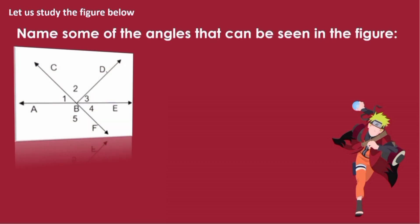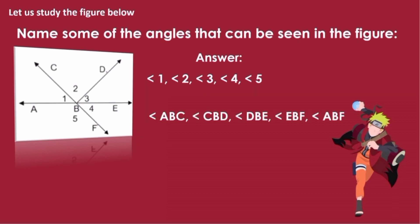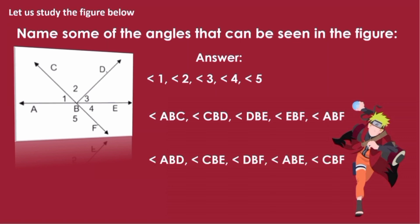Let us study the figure below. Name some of the angles that can be seen in the figure. For our answer, we have angle 1, angle 2, angle 3, angle 4, angle 5. We also have angle ABC, angle CBD, angle DBE, angle EBF, angle ABF, angle ABD, angle CBE, angle DBF, angle ABE, and angle CBF.